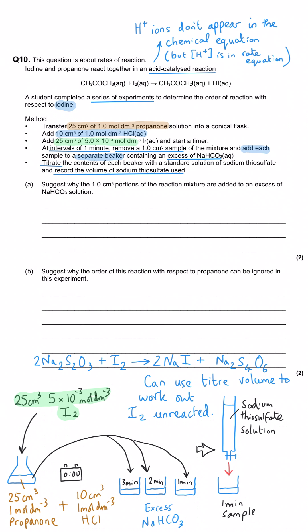We've been asked to suggest why 1 cm³ portions of the reaction mixture are added to an excess of sodium hydrogen carbonate solution. This is simply to stop the reaction. This reaction is acid-catalyzed, the sodium hydrogen carbonate solution is a base that will neutralize the acid catalyst, so there'll be no more H+ ions and the reaction will end.